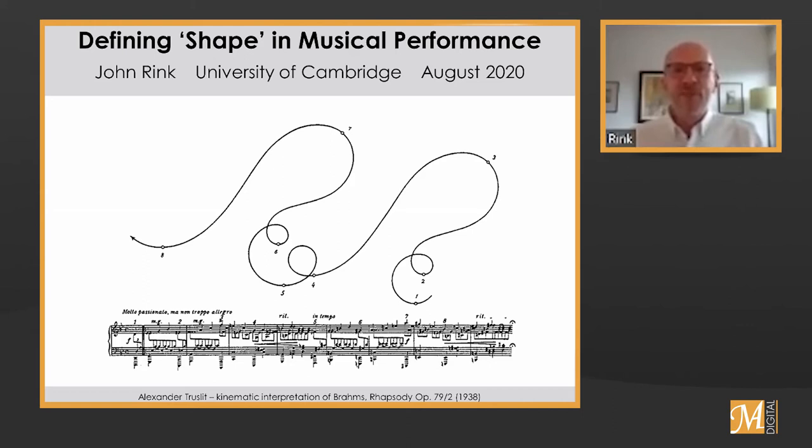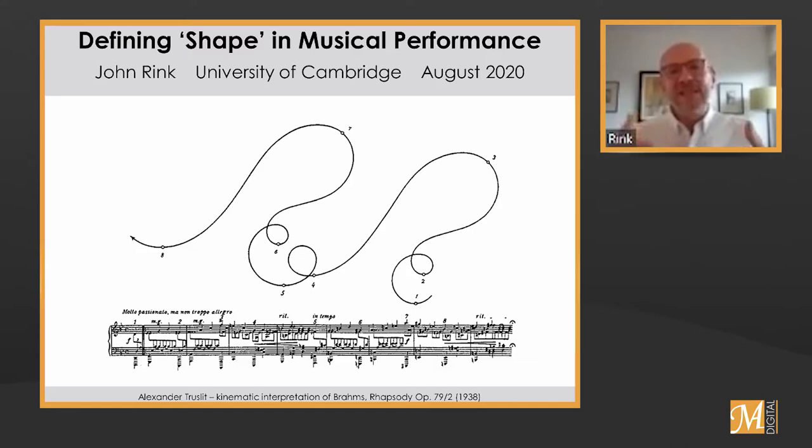There's probably no better image that I could show you in trying to define shape in musical performance than this diagram from Alexander Truslit, the German writer who, in 1938, produced this kinematic interpretation of Brahms's Rhapsody, Op. 79, No. 2. In this diagram, Truslit tries to capture the motion inherent in the music — or really, implied by the score and realised in sound by the performer.